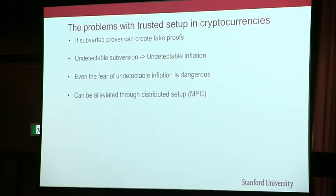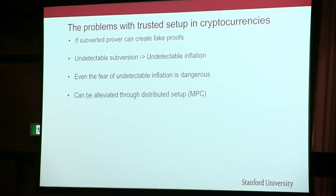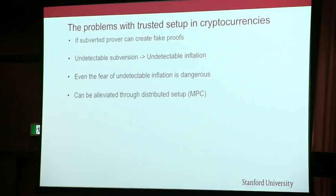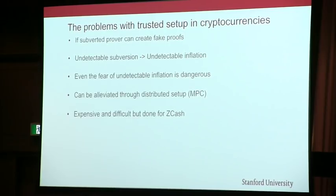What Zcash has done — and where they've done an amazing job, with Ian, Sean, and others doing a lot of the work — is using a distributed setup. Instead of having to trust one person, you trust seven people, or better, a hundred people. As long as one person is honest, you're good. This really seems to alleviate the fears because, how likely is it that a hundred people are colluding together? Especially if you're one of those hundred people, you can be really sure nothing bad has happened.